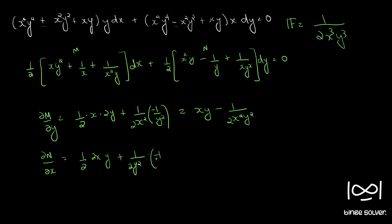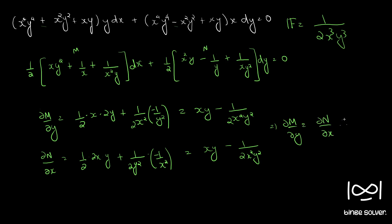Computing ∂N/∂x gives xy minus 1/(2x²y²). We can see ∂M/∂y is equal to ∂N/∂x, therefore the differential equation is exact.